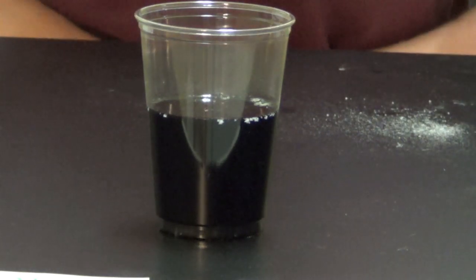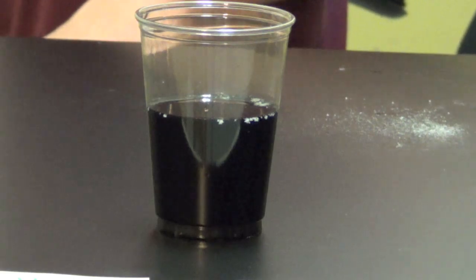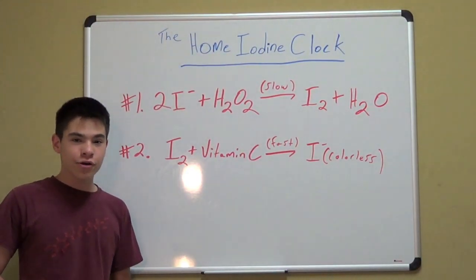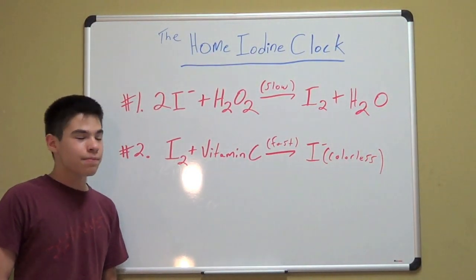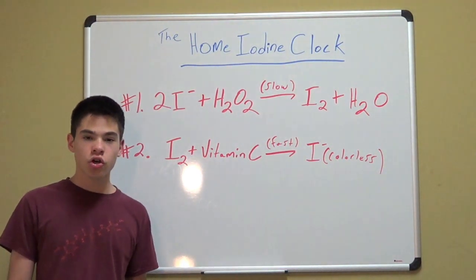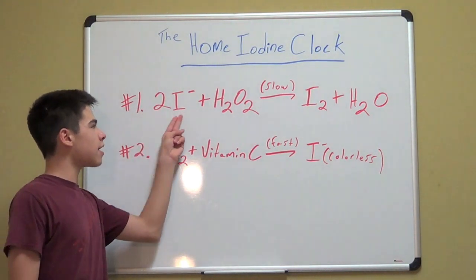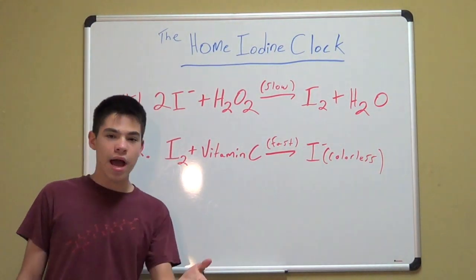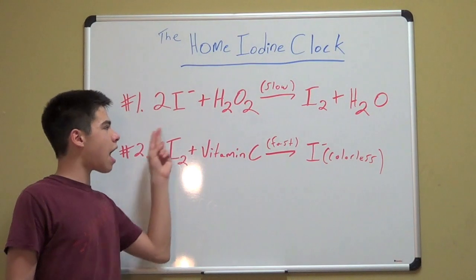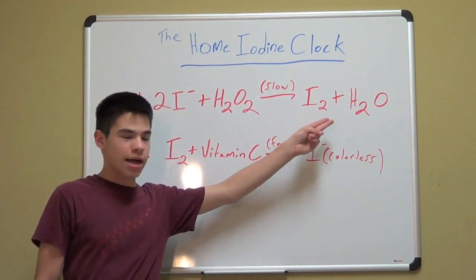Now, some of you may be wondering what just happened. So, let's explore the chemistry of clock reactions. Now, some of my brighter audience members may have already picked up on the fact that there are actually two reactions occurring simultaneously. The first is the iodine ion in the iodine tincture being oxidized by the hydrogen peroxide to yield elemental iodine and water.